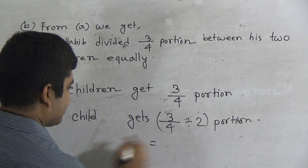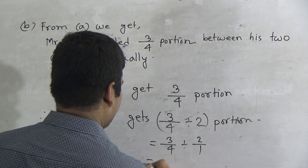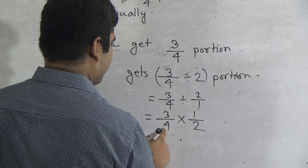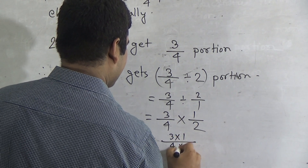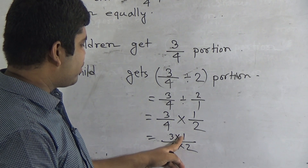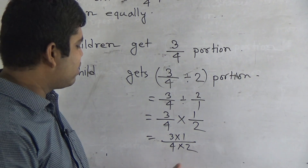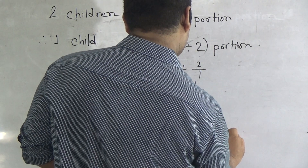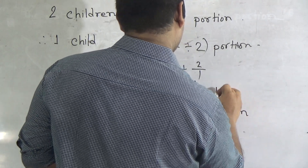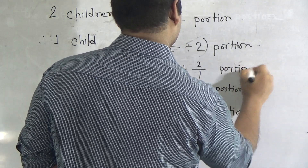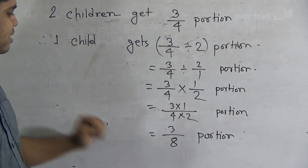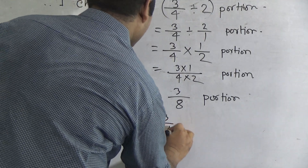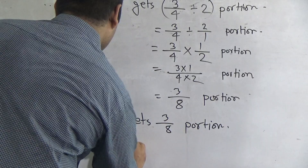Now notice: three by four divided by two becomes three by four multiplied by one by two — we reverse the fraction. Three is multiplied with one and four is multiplied with two. Three and one are odd numbers; four and two are even numbers. Three multiplied by one gives three, and four multiplied by two gives eight. So we get three by eight portion. Each child gets three by eight portion. This is the answer for Question B.